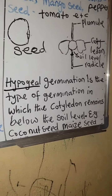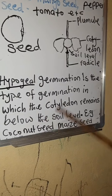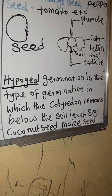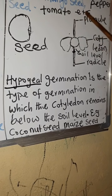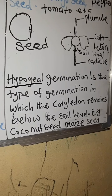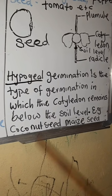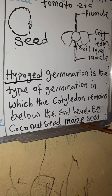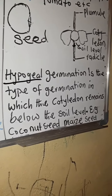In hypogeal germination, you will find out that you won't see the cotyledon — you only see the plumule. Examples of hypogeal germination include: coconut seed, maize seed, millet seed, guinea corn seed, and even yam seed.